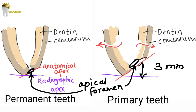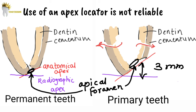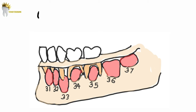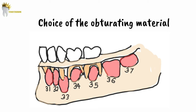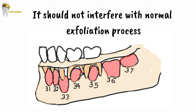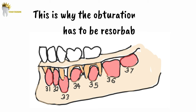Because of all these factors, use of an apex locator is not reliable to measure the true working length. The next problem is over-instrumentation, which has the potential to damage the underlying permanent tooth. Another important consideration is the choice of obturating material. Obturation of the root canal space in a primary tooth must not interfere with normal exfoliation, so this requires a resorbable obturating material.